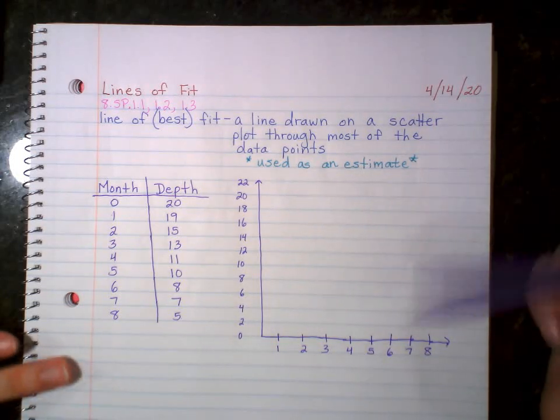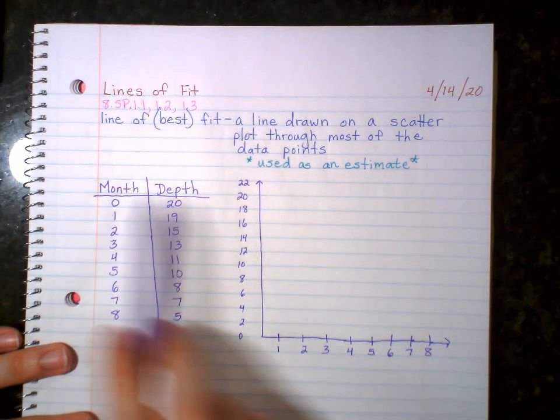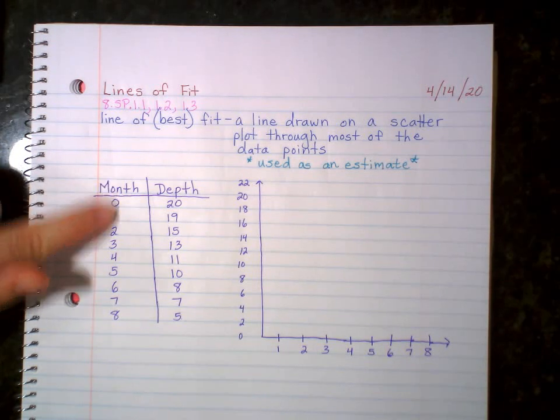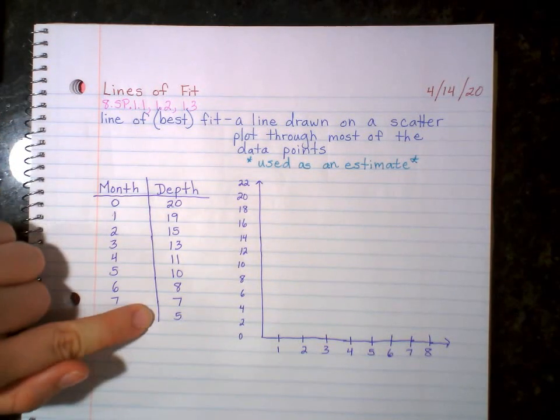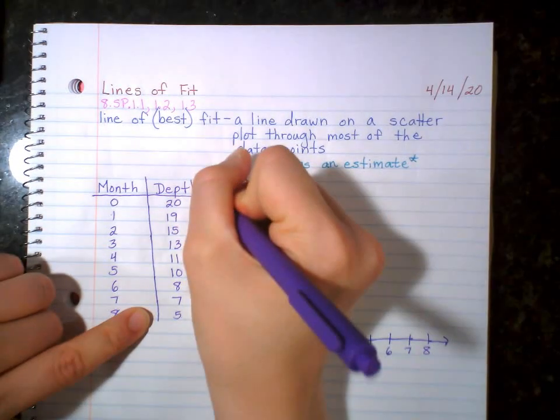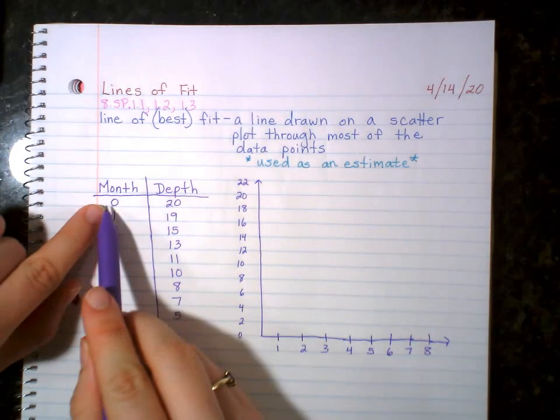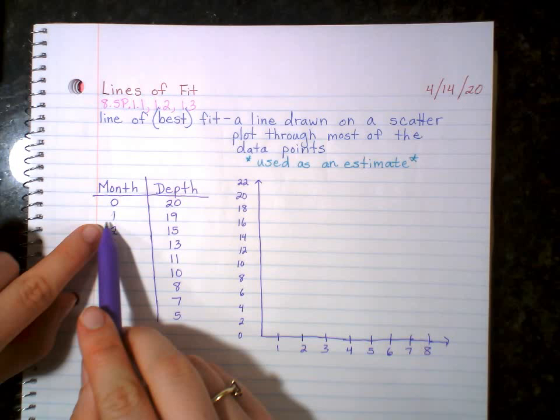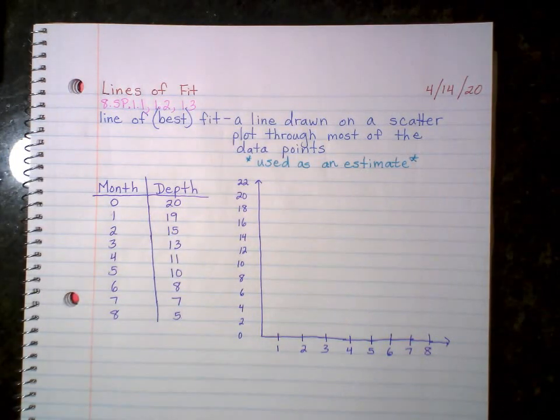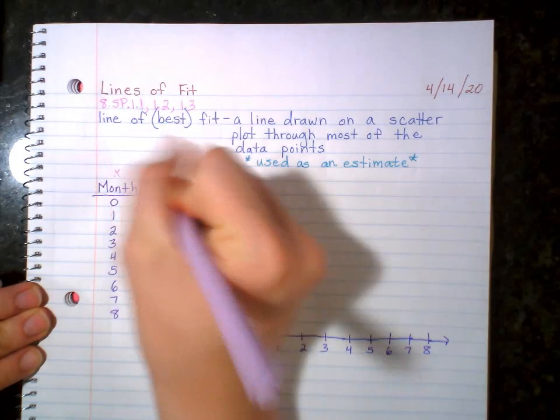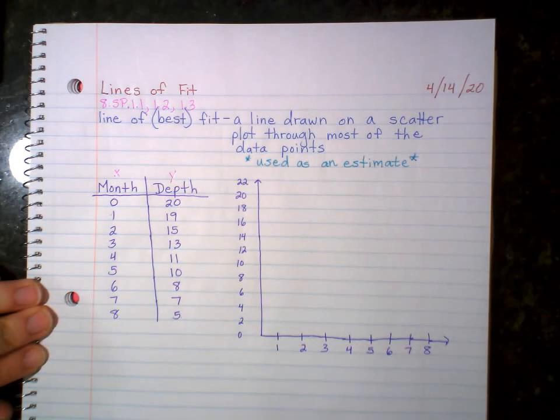It's a line drawn on a scatter plot. Okay. The plot with all the dots through most of the data points. It's just used as an estimate. It's a guess. It's a guesstimate. Okay. So first we're going to actually create one. So we have this table. It gives us months and then it gives us depth. All right. The depth is in feet. So at zero months, it was 20 feet. At one month it was 19 feet. Guys, these are just your coordinates that you're going to graph. This is our X. This is our Y.